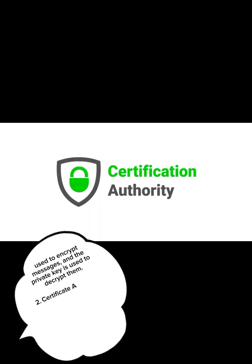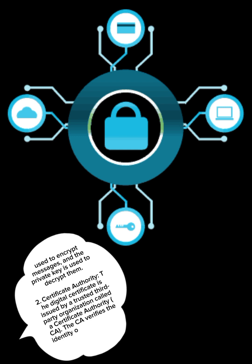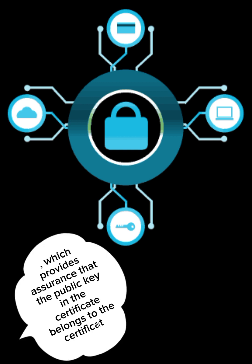2. Certificate Authority: The digital certificate is issued by a trusted third-party organization called a Certificate Authority. The Certificate Authority verifies the identity of the certificate holder and signs the certificate, which provides assurance that the public key in the certificate belongs to the certificate holder.